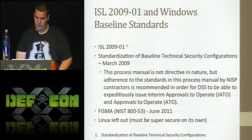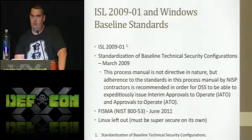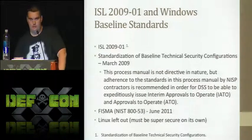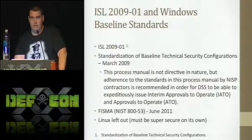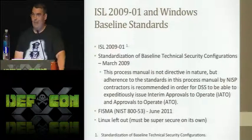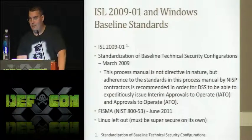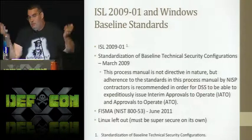In 2009 they came out with Windows baseline standards — about 150 pages — also called the Standardization of Baseline Technical Security Configurations. This basically says how you configure Windows. The problem is a lot of companies have fought this because the NISPOM is the only document they have to follow. The baseline standards clearly state in the front that this process manual is not directive in nature — it just says if you want to get approved in a timely manner you have to follow the document. But if a company doesn't care about timely approval, they don't really have to follow it.